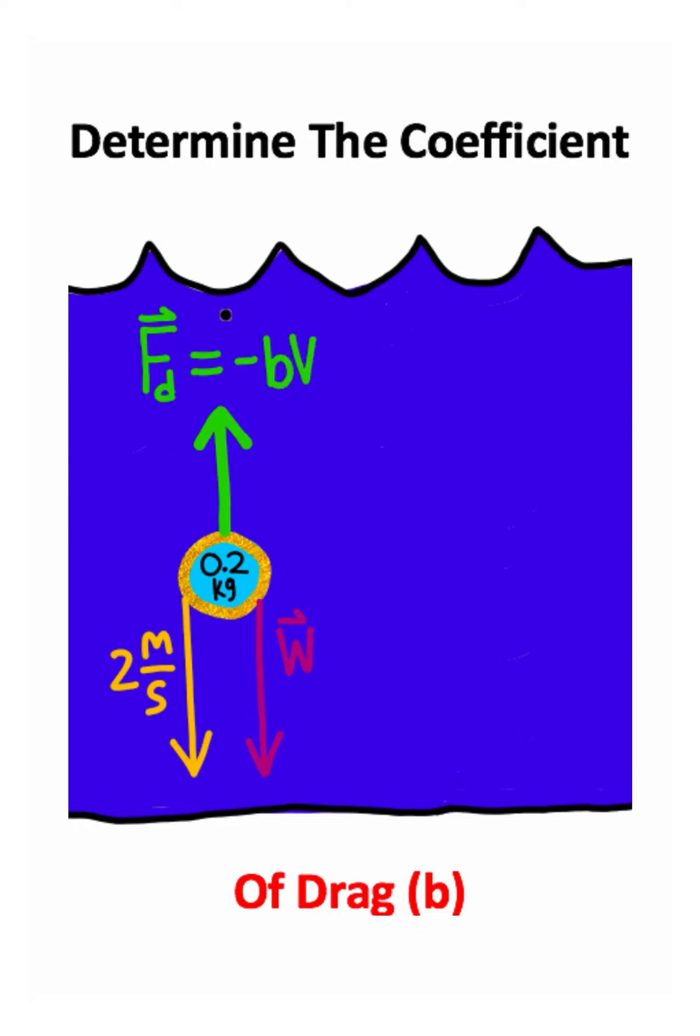I have the equation for drag force, it's negative b times v, where b is the coefficient and v is the terminal velocity. And we have the mass of this earring.